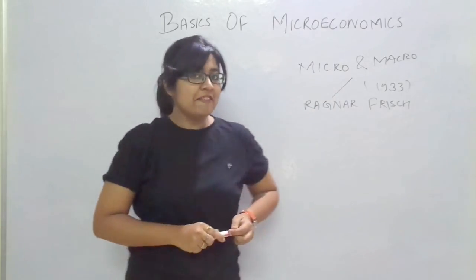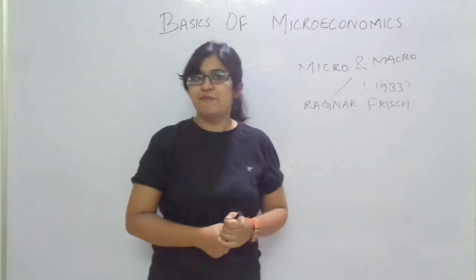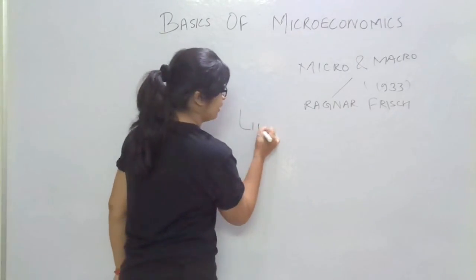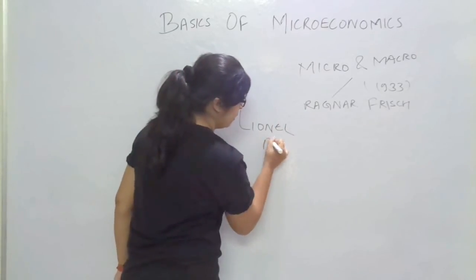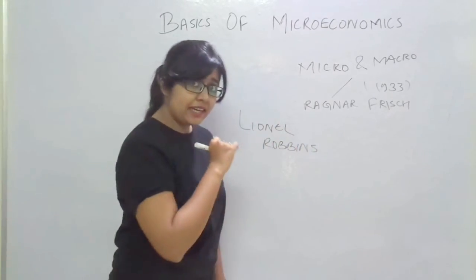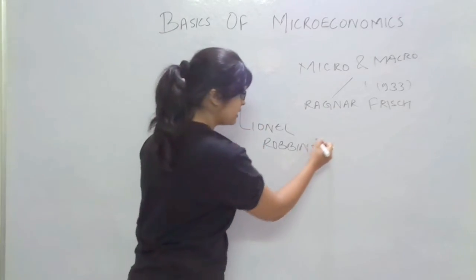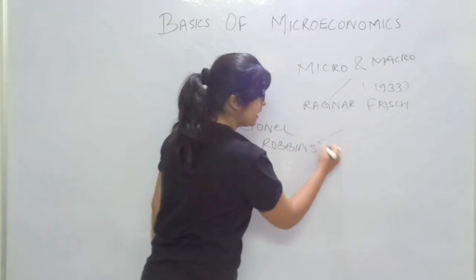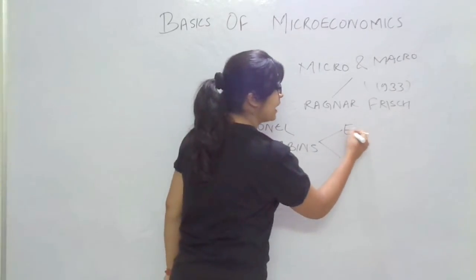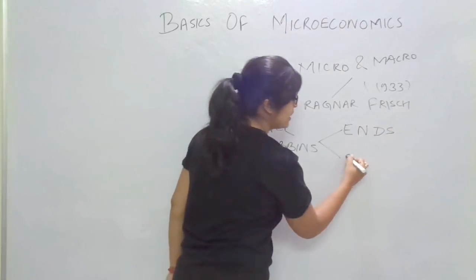So after this quick dose of facts, let's jump to the basics of microeconomics. Another economist, Lionel Robbins, stated clearly that economics is in fact a science which studies human behavior as a relationship between ends.